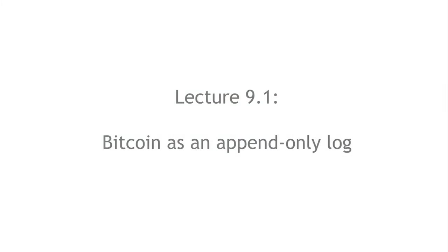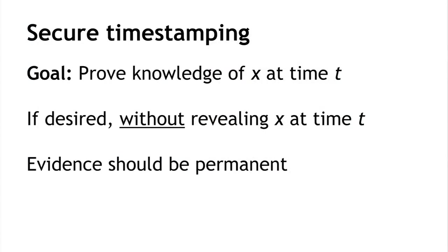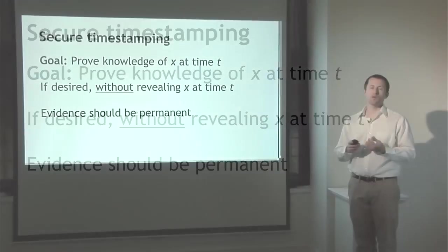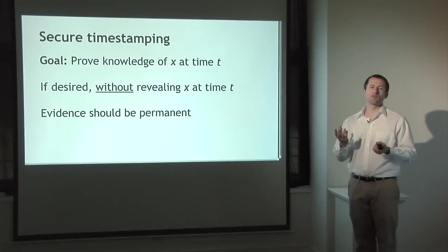To start, we're going to talk about what we can do with the fact that Bitcoin is an append-only log — a data structure that we can only write to, and once we've written data to it the data will remain there forever. We also have a secure notion of time, so we can tell that certain things were written to the log before or after other things based on which block they're included in. Using this, we want to build secure time stamping: the ability to prove that we know some value X at a specific time t, with that evidence being permanent.